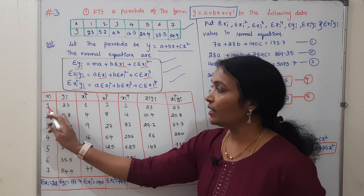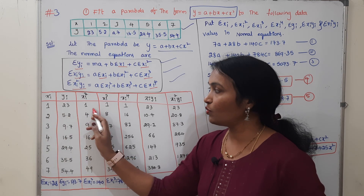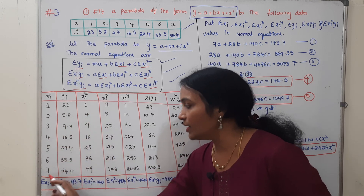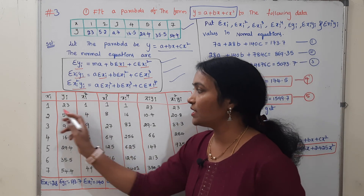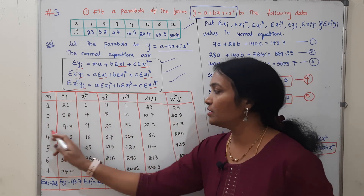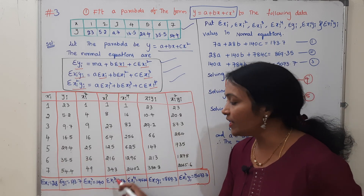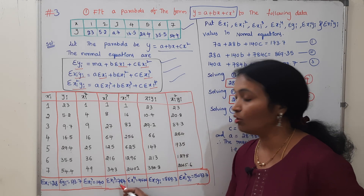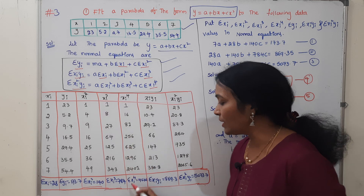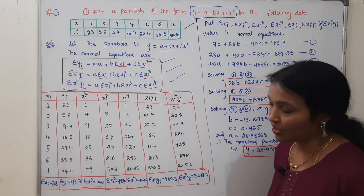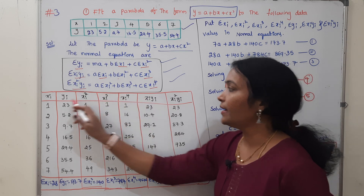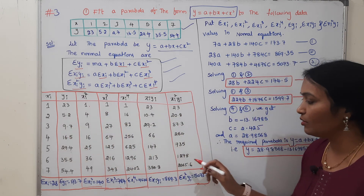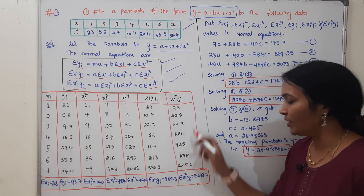Next, xi² values: 1²=1, 2²=4, 3²=9, ... 7²=49. Then xi³ values: 1³, 2³=8, 3³, 4³, 5³, 6³, 7³. Summation xi² is 140, summation xi³ is 784, summation xi⁴. Then xi·yi and xi²·yi are also computed. Summation xi²·yi values are obtained from the table.